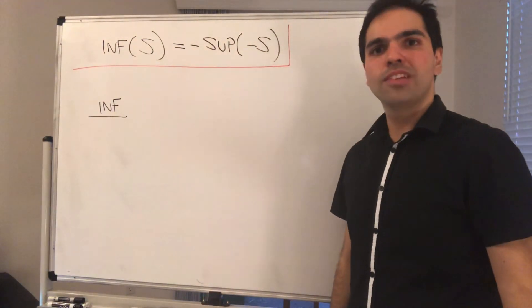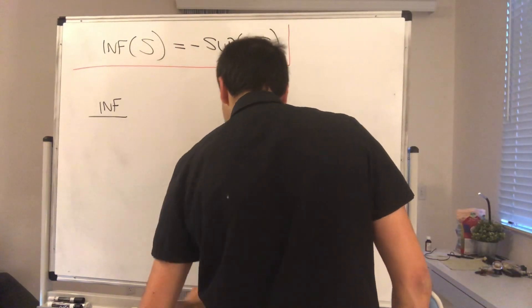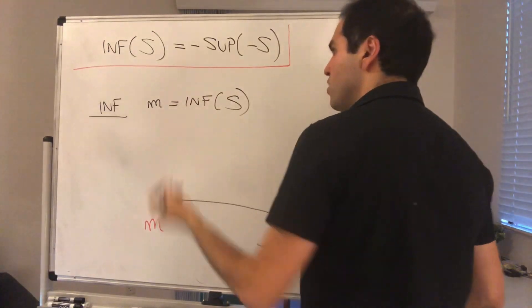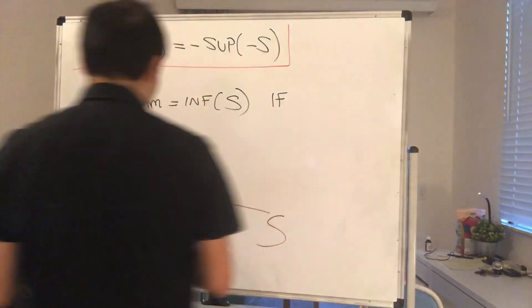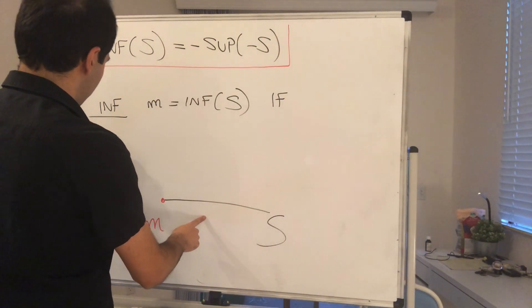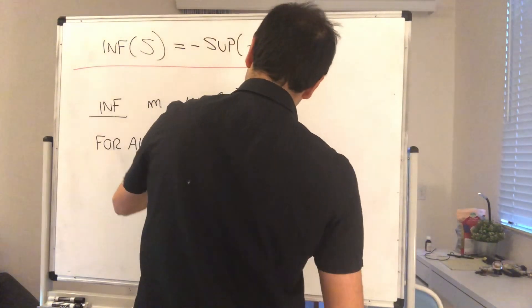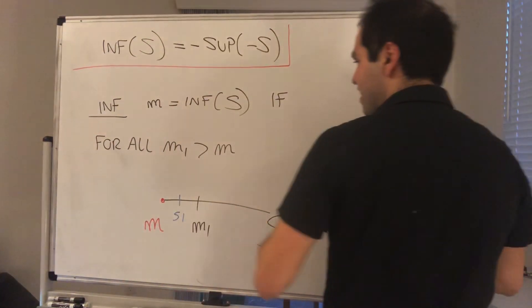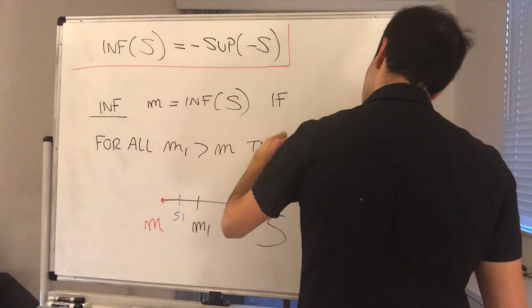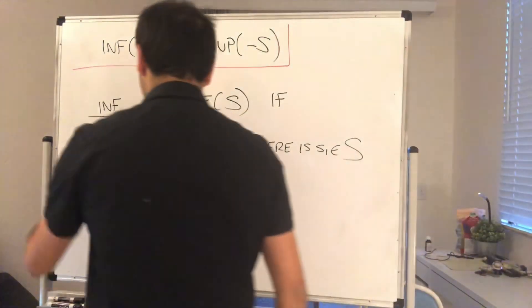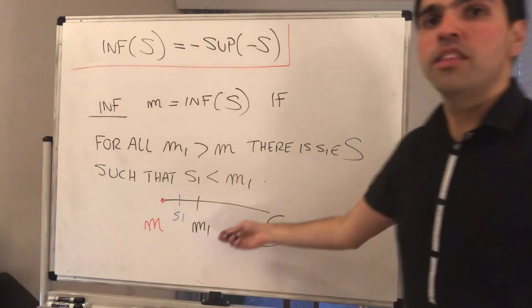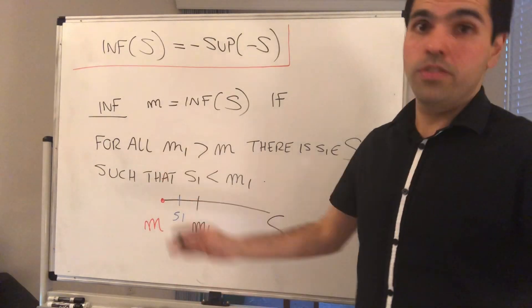Suppose S is a non-empty subset of R that is bounded below by m. Then we say that m is the greatest lower bound, and we write m is the infimum of S, if and only if the following holds: for all M1 bigger than m, you can actually find an element of S called S1 that is smaller than M1. So if I tell you you're not the worst student in the class, it means there's a student who's worse than you.